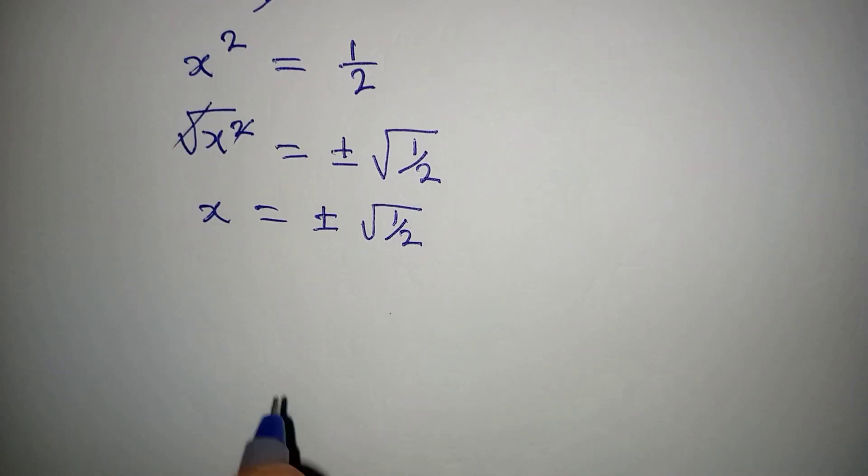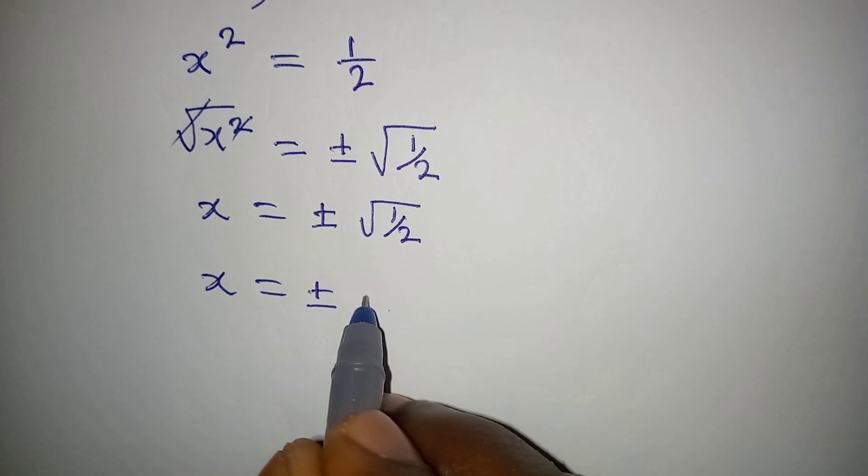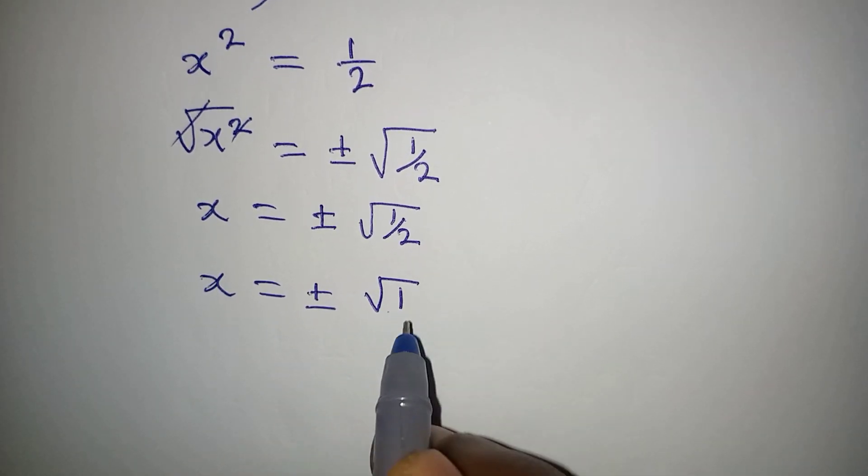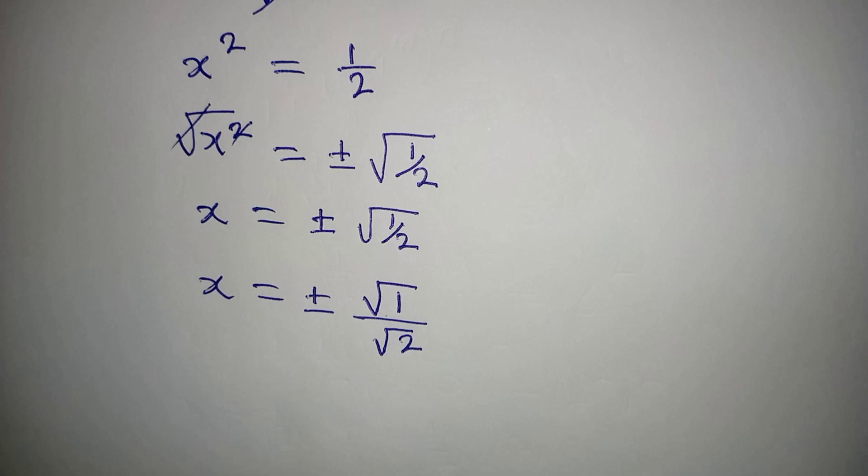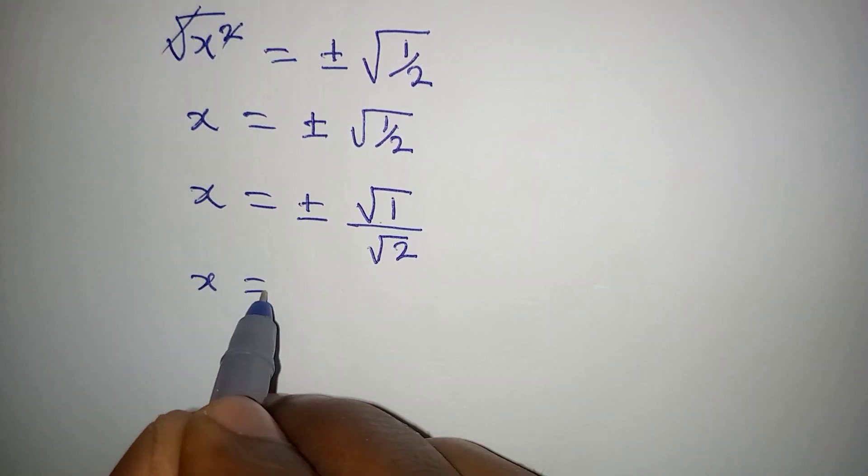By the way, from here x is equal to plus or minus, we can have square root of 1 over square root of 2. They are still the same thing, right? So that we have x to be equal to plus or minus,